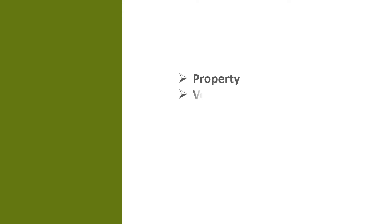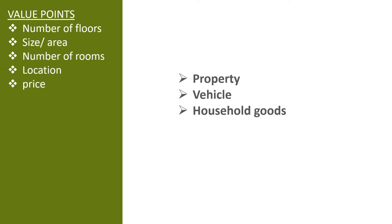There are three types of classified advertisements under sales or purchase. You can use them for property, vehicles, and household goods. Now let us look at a few examples to understand these in a better way.